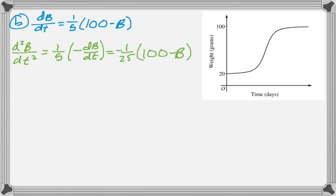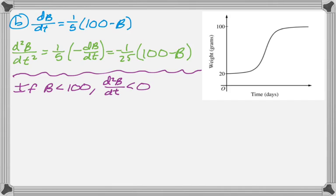Now the next question is, why can the graph that's been provided not be the graph of B(t)? And we have to use the second derivative to explain. Alright, so if you look at the second derivative, if B is less than 100, then the second derivative is less than 0. And if the second derivative is less than 0, then the graph of B(t) needs to be concave down.